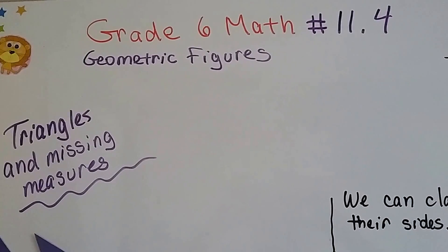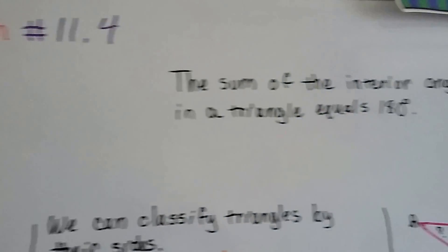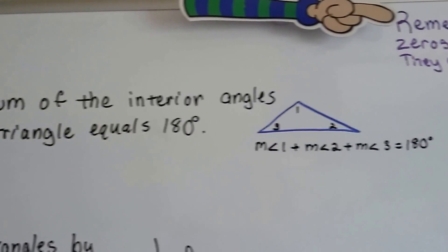Grade 6 math number 11.4, Triangles and Missing Measures. The sum of the interior angles in a triangle equals 180.